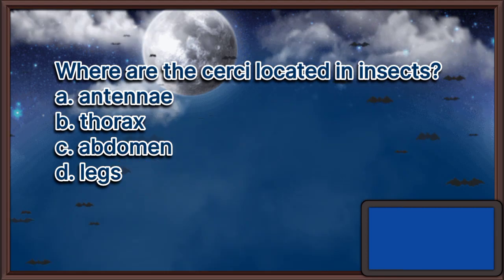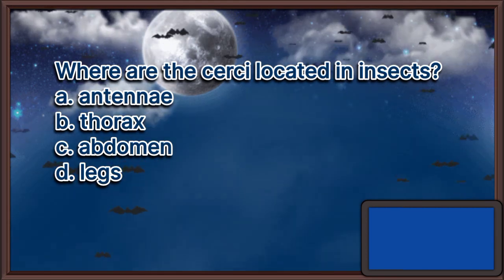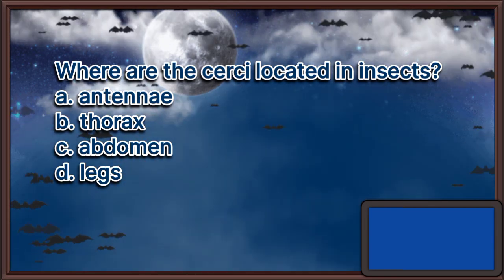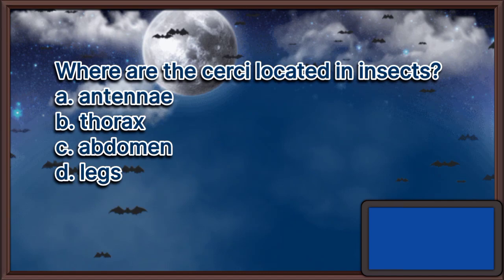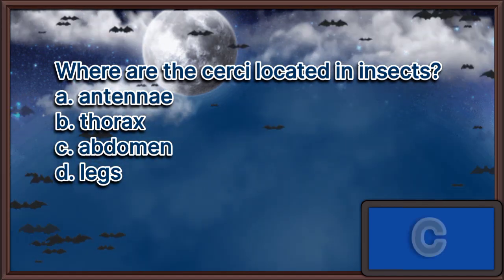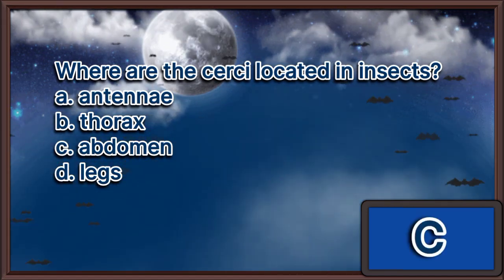Where are the cerci located in insects? A. Antennae. B. Thorax. C. Abdomen. D. Legs. The answer is letter C.